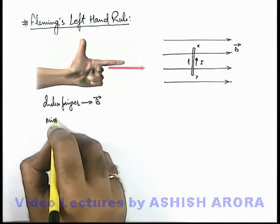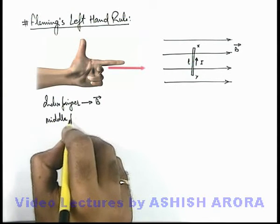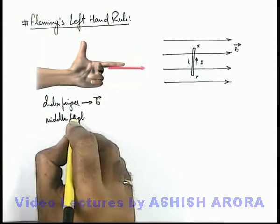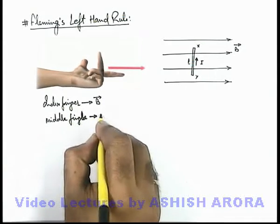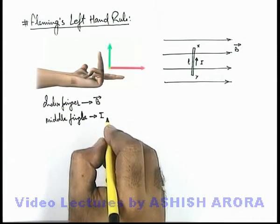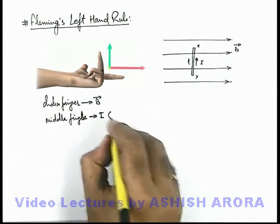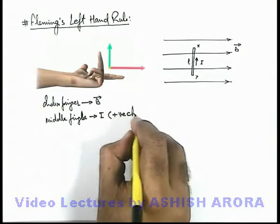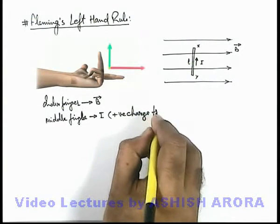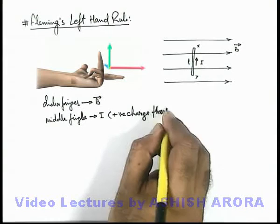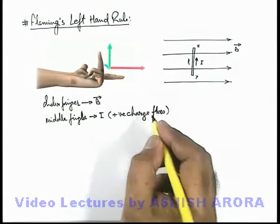if we point our middle finger along the direction of current—or basically we can write it as positive charge flow direction—because current is in the direction of positive charge flow.